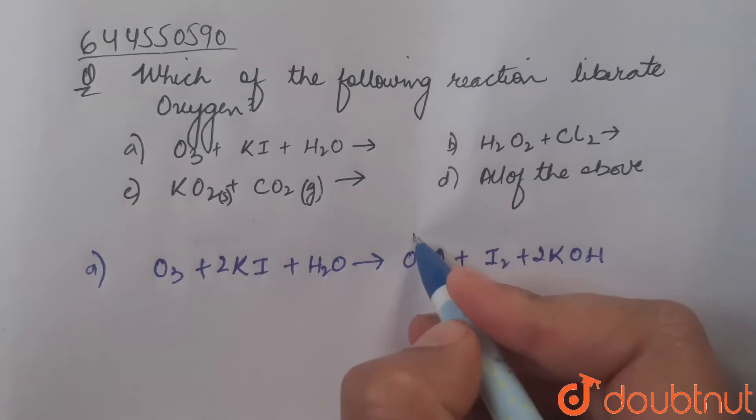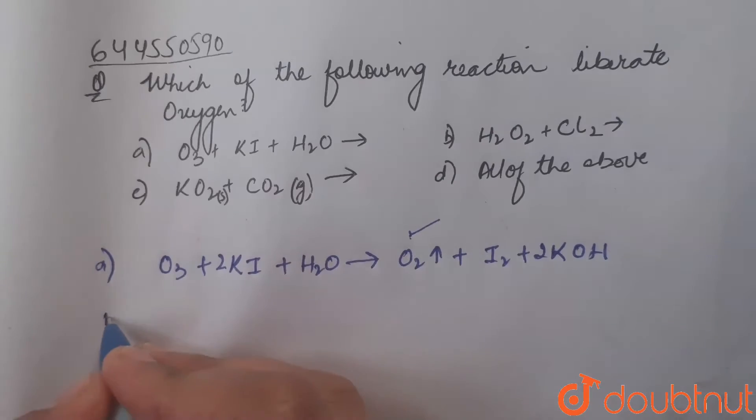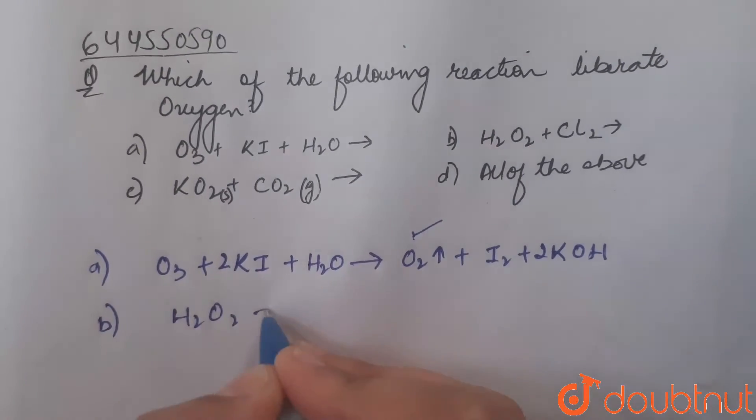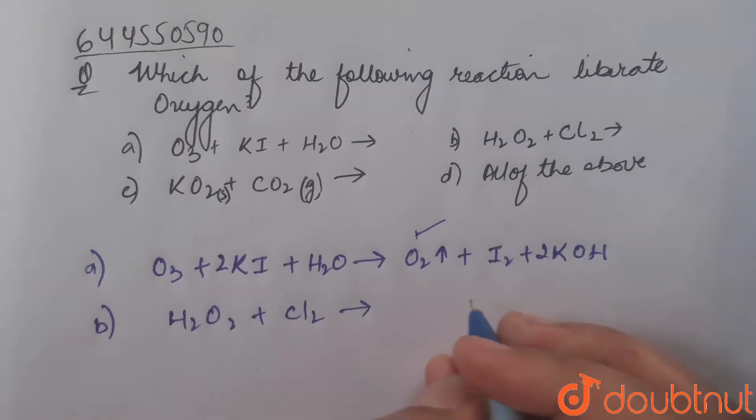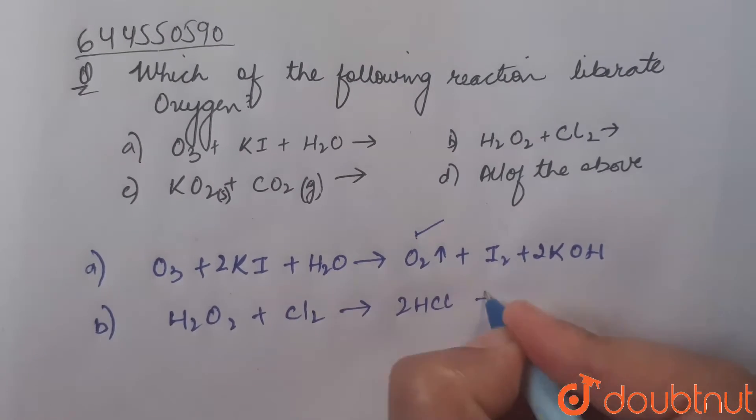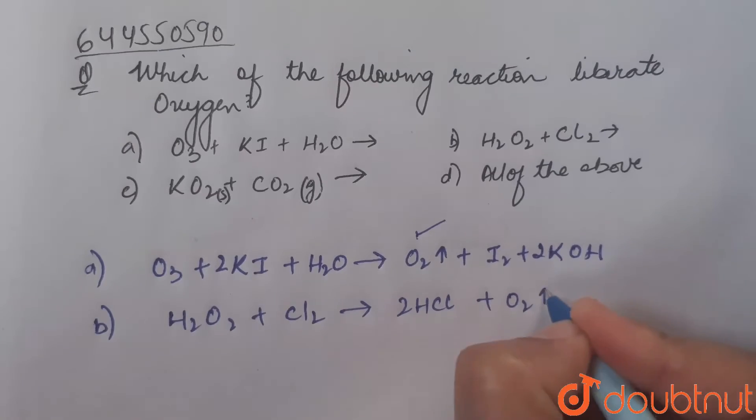Next section is hydrogen peroxide H2O2 reacting with chlorine molecule Cl2. When they react, they form hydrogen chloride HCl and oxygen gas O2. So in this section also, oxygen gas is evolving.